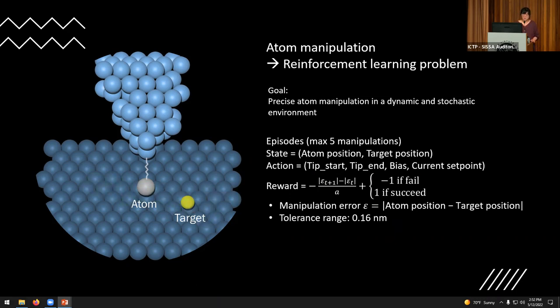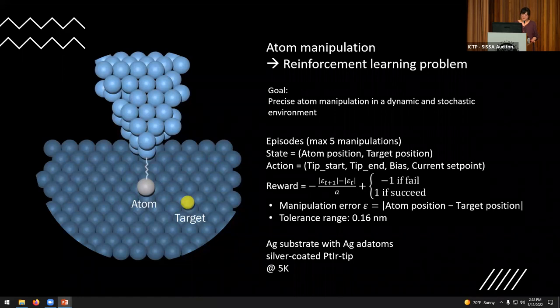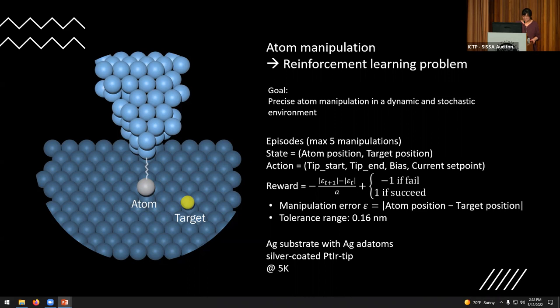Okay, so these are the rules. So this was our first experiments and here we choose the material system, the one we choose is silver. So everything here is silver include the tip are coated in silver and the substrate and the atom we manipulate are also silver.